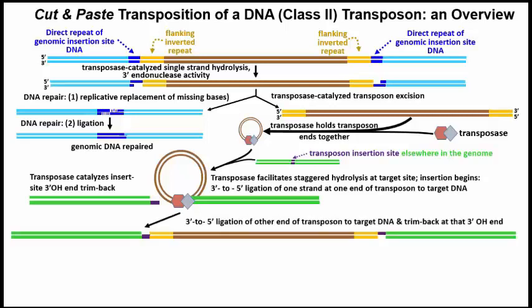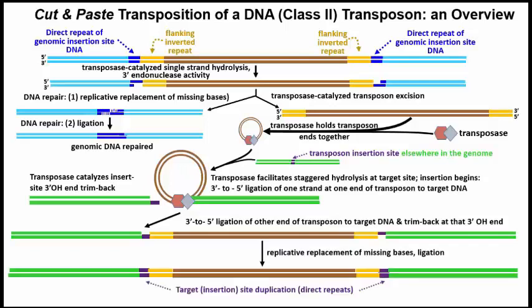With the transposase still holding on, the next step is ligation of one strand at the other end of the transposon to the target DNA, and a similar trim back of the 3' hydroxyl end of the other target DNA strand. In the final steps, DNA polymerase fills in the missing bases, and DNA ligase completes the paste part of the transposition. Fill-in of the bases at either end of the inserted element completes creation of the direct repeats characteristic of transposition.